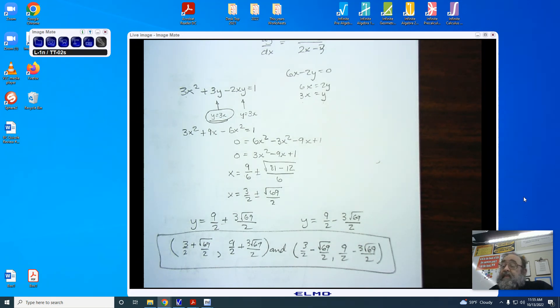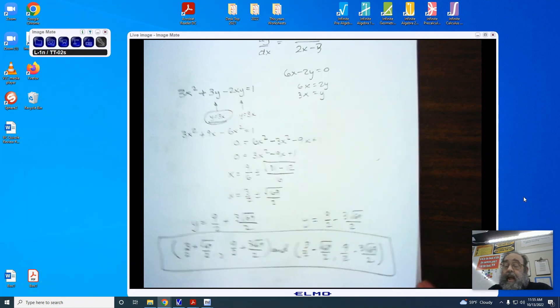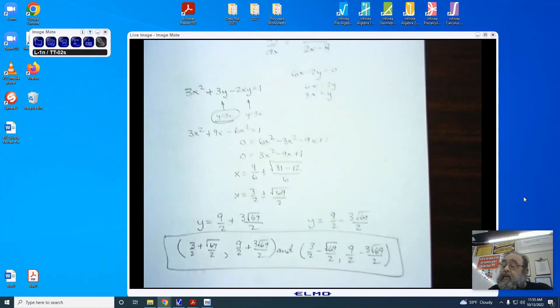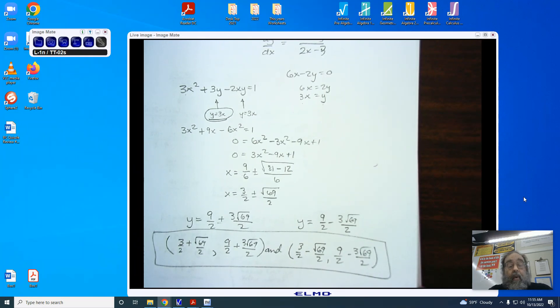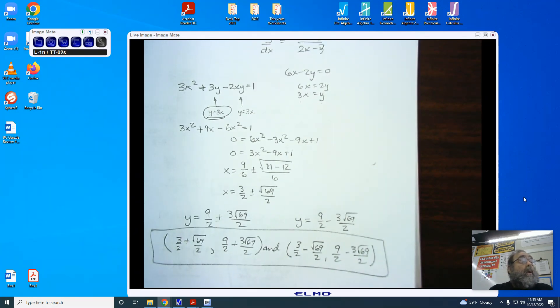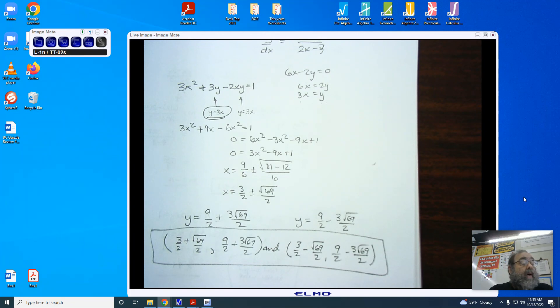That's the first problem that I asked you to do on the implicit differentiation practice. And I'm hoping that you will use this information to help you do numbers 2, 3, 4, or part 2, 3, 4, 5, and 6. So, you've got 5 more to do and we will be going over.